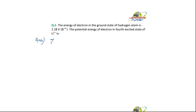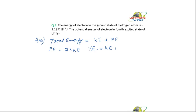We know that the total energy is equal to kinetic energy plus the potential energy. We also know that the potential energy is equal to 2 times the kinetic energy — we solved this in our previous problem-solving session. So the total energy equals kinetic energy plus (minus the potential energy), because potential energy is taken in negative terms. Therefore total energy equals kinetic energy minus 2 × kinetic energy, which gives total energy equal to negative kinetic energy.